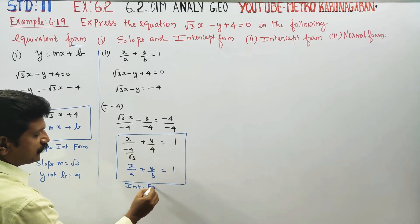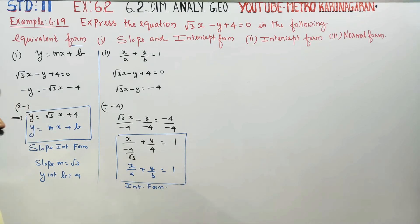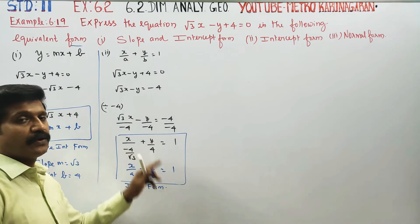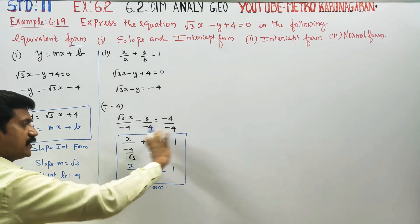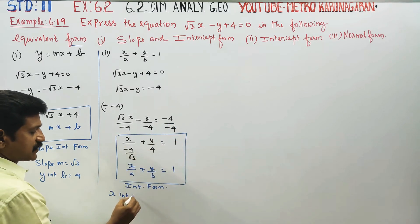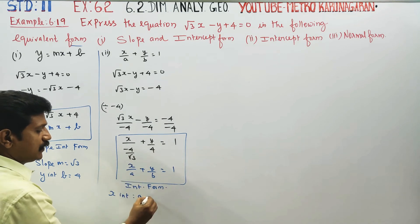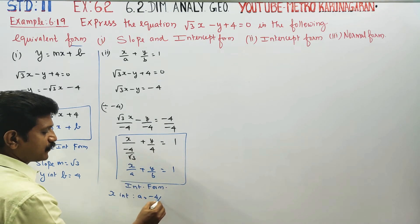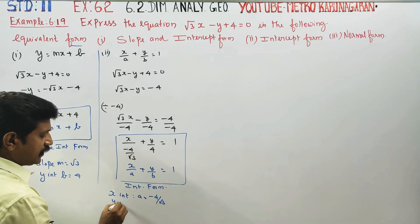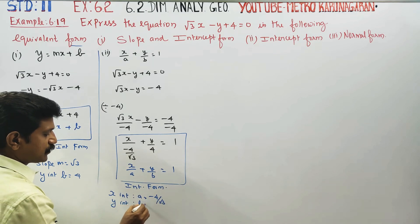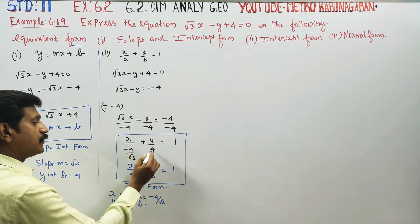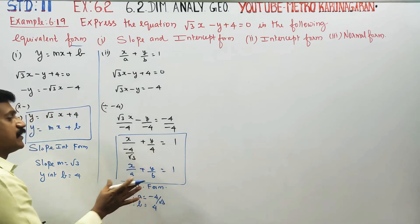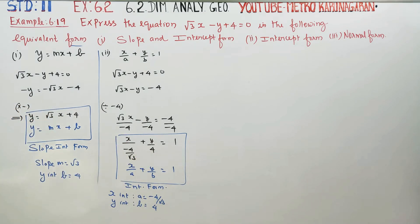This is the intercept form. The x-intercept a is equal to minus 4 by root 3. The y-intercept b is equal to 4. This is the intercept form.